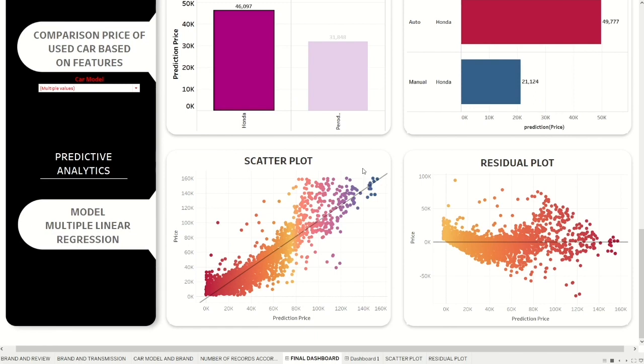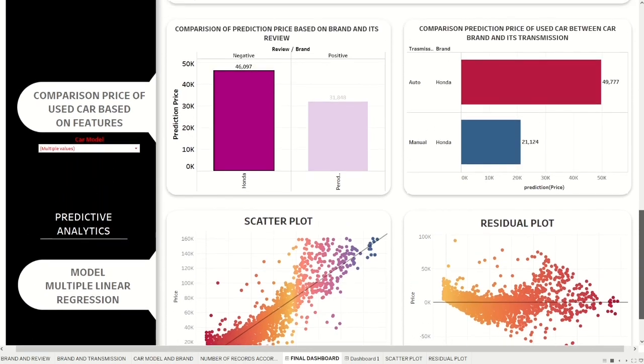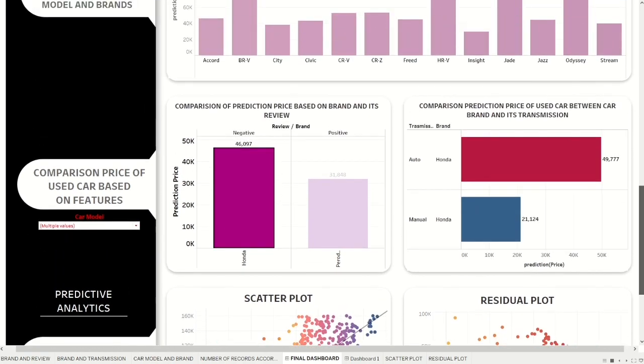The graph of prediction price seems to have very nice dispersion and is scattered nicely to fit the linear line. That's all from us — thank you.